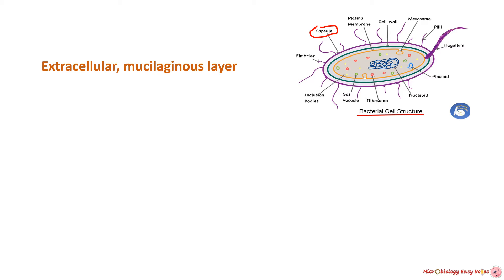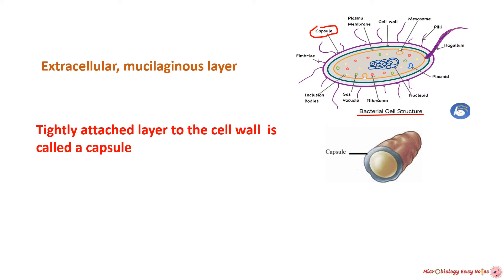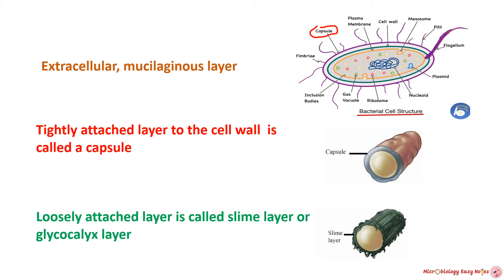When this material is tightly attached to the cell wall it is called a capsule, and it cannot be washed off easily. A loosely attached layer is called the glycocalyx layer. If you want to see a detailed video on bacterial capsule and glycocalyx layer, click on the link displaying above.